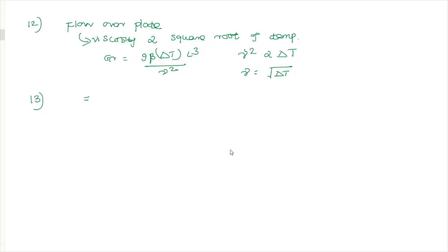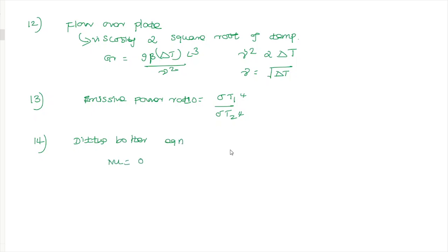For radiation, the heat ratio equals σT1⁴ / σT2⁴, simplified as T1⁴ / T2⁴. The Dittus-Boelter equation is: Nu = 0.023 × Re^(4/5) × Pr^n. The value of n depends on heating or cooling: for heating n = 0.4, for cooling n = 0.3. The correct answer for cooling is 0.3.